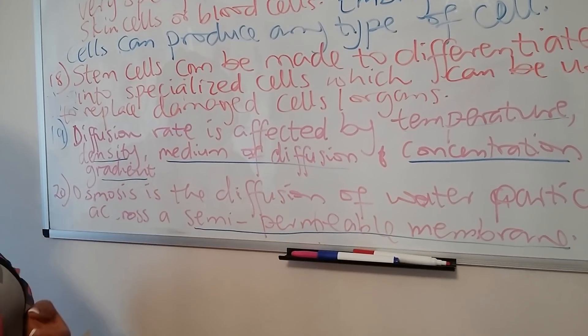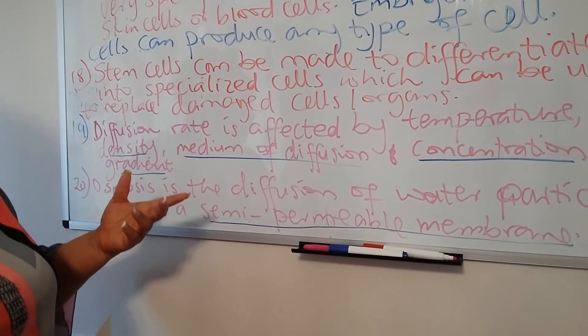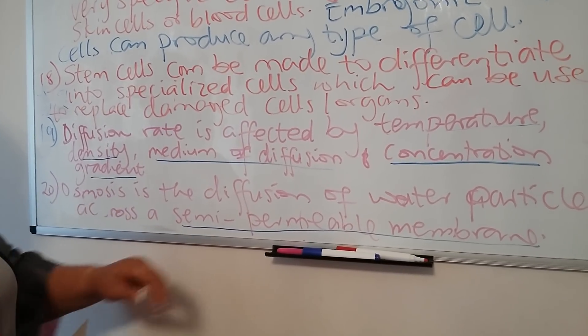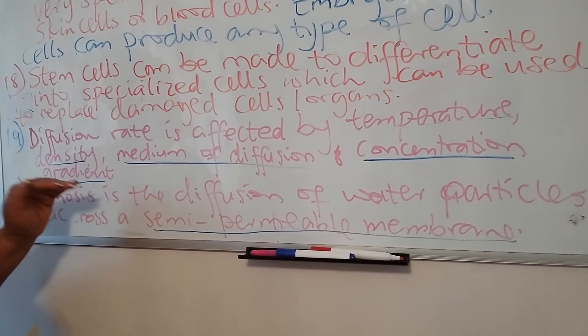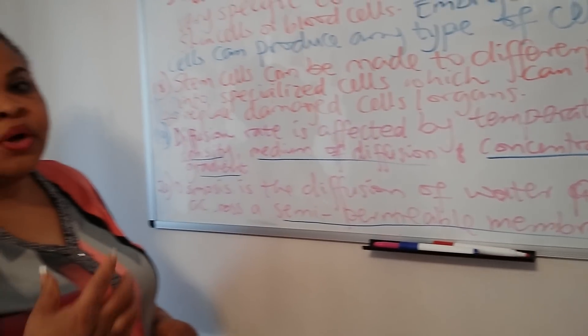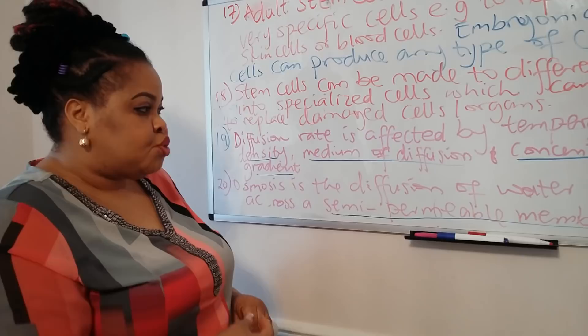In terms of the concentration gradient, I just explained it with what happened in the alveoli of the lungs when they try to get rid of carbon dioxide from the blood.